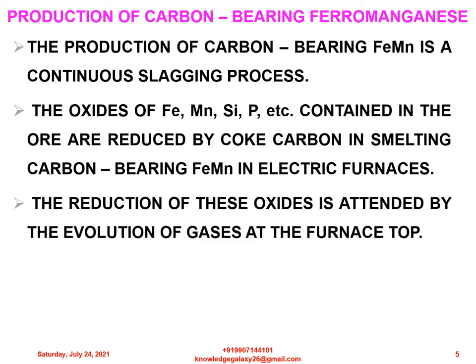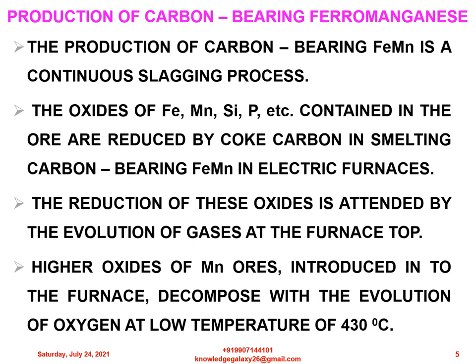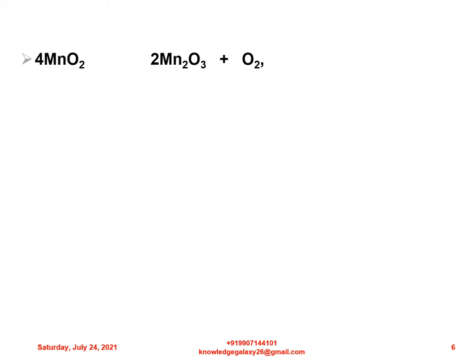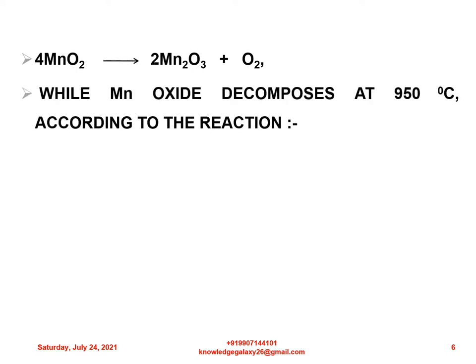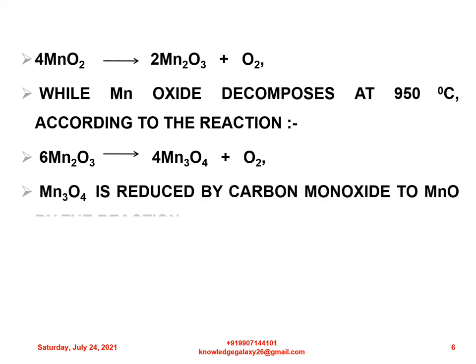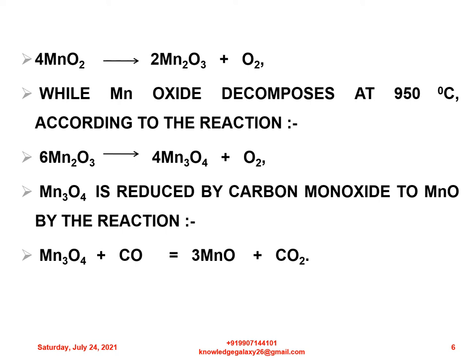The reduction of these oxides is attended by the evolution of gases at the furnace top. Higher oxides of manganese ores introduced into the furnace decompose with the evolution of oxygen at low temperature of 430°C: 4MnO₂ → 2Mn₂O₃ + O₂. While manganese oxide decomposes at 950°C according to the reaction: 6Mn₂O₃ → 4Mn₃O₄ + O₂. Mn₃O₄ is reduced by carbon monoxide to MnO by the reaction: Mn₃O₄ + CO → 3MnO + CO₂.